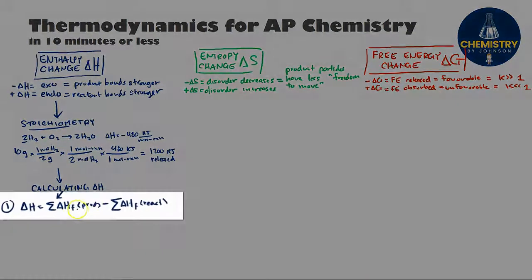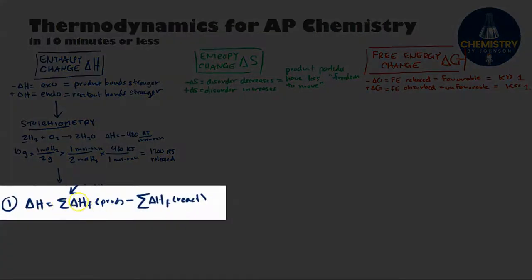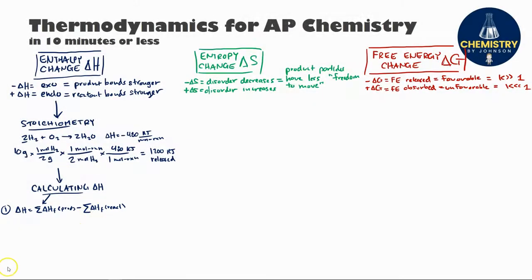The first one is an equation where you add up, so the sum of all the enthalpies of formations of the products minus the enthalpies of formations of the reactants.